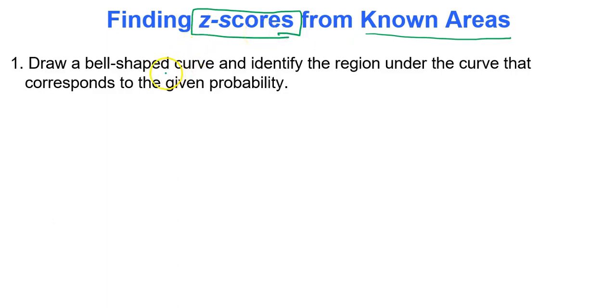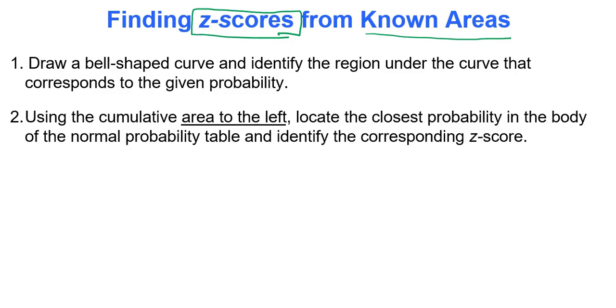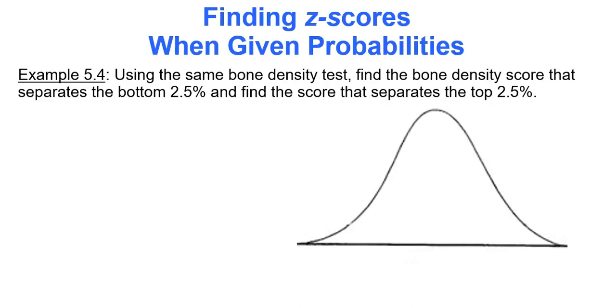We're going to draw a bell-shaped curve and identify the region under the curve that corresponds to the given probability. We'll focus on drawing a picture for every single question, and then using the cumulative area to the left of that unknown data value we're trying to find. We'll use our table to identify the data value that gives that probability the best. We'll find the closest probability in the body of the normal probability table, and then I'll show you how to use technology. The probability table is just for you to understand how things used to be done and how some people still do stuff.